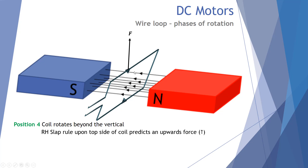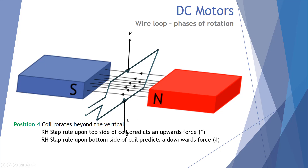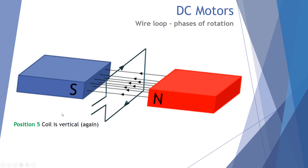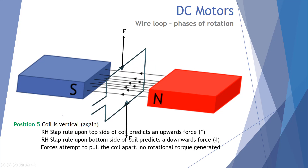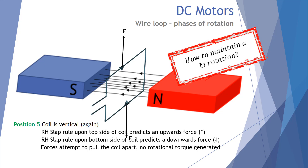In position four, we still have current traveling into the page and the magnetic field moving from right to left. The right-hand slap rule generates an upwards force on the top section and a downwards force on the bottom. But from this position, this generates an anti-clockwise torque, which will push the coil back to the vertical. So with our current arrangement, the coil will rotate from horizontal through vertical, but then be pushed back — how can we maintain rotation in one direction?